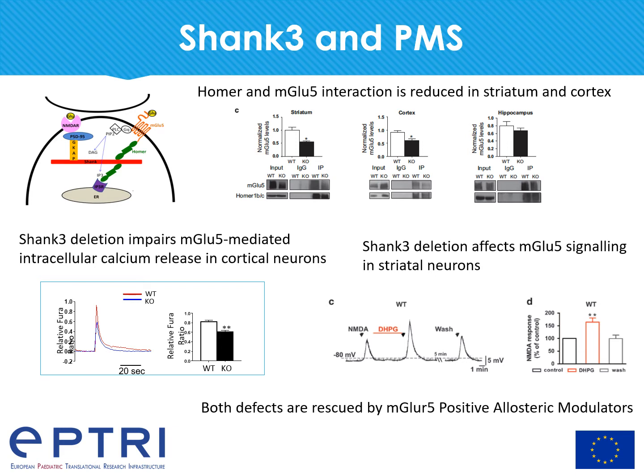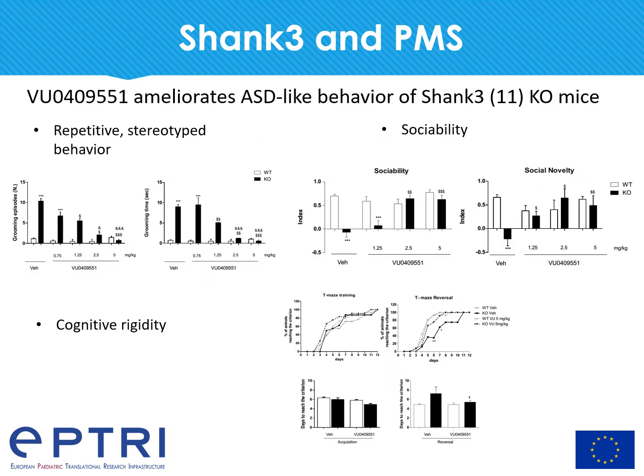Importantly, when we treated mice with a molecule able to increase the activity of the mGLU5 receptor, we were able to rescue both intracellular calcium release and NMDA-mediated currents. We then tested the activity of a novel mGLU5 positive allosteric modulator (PAM) on the behavior of SHANK3 knockout mice, and found that acute treatment with this mGLU5-PAM was able to completely rescue repetitive behavior, altered sociability, and cognitive rigidity.